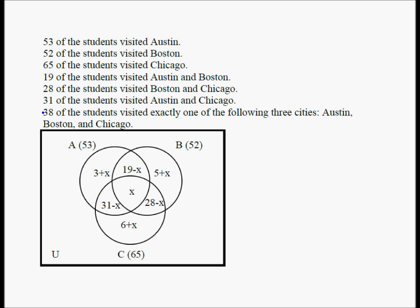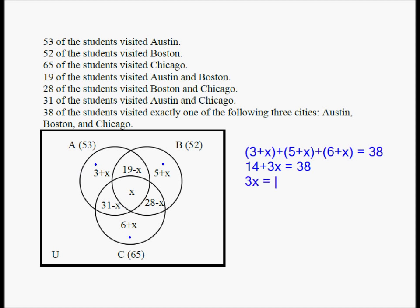We use the last statement to find x: the three only-one-city regions must sum to 38. So (3+x) + (5+x) + (6+x) = 38, which gives 14 + 3x = 38, so 3x = 24, meaning x = 8.